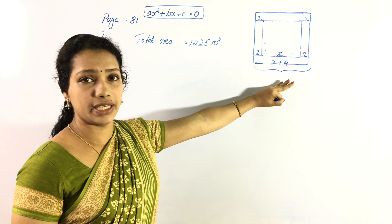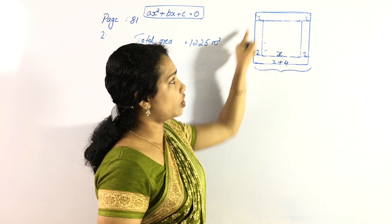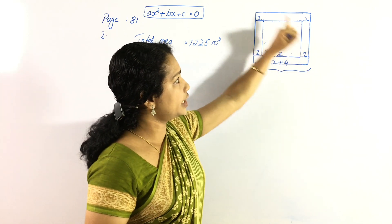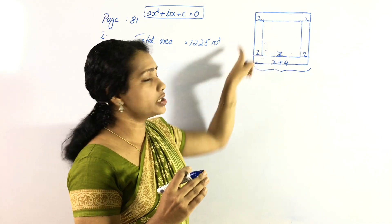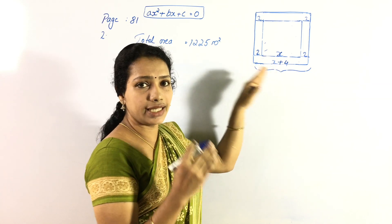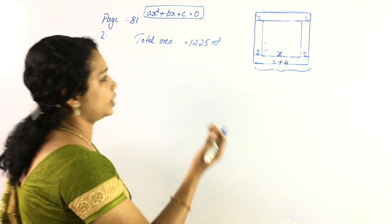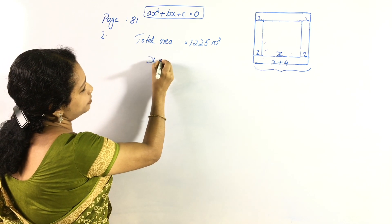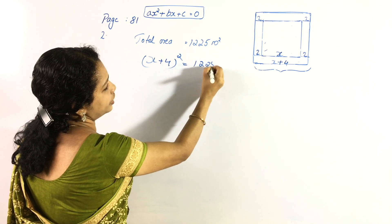The total figure includes the path, ground, and area. X plus 4 is one side of the total square including the path. So (x+4)² equals the total area. The answer is 1225, so (x+4)² = 1225.